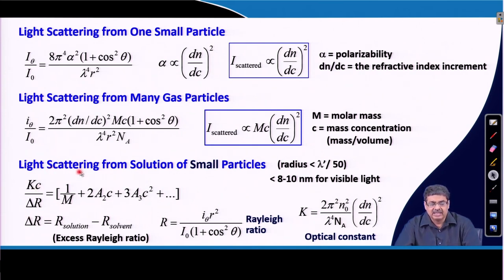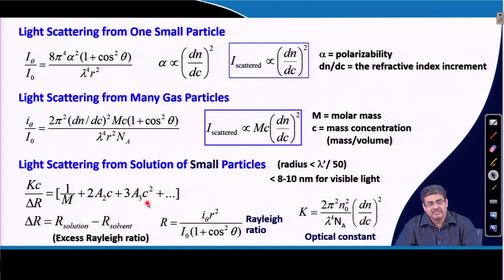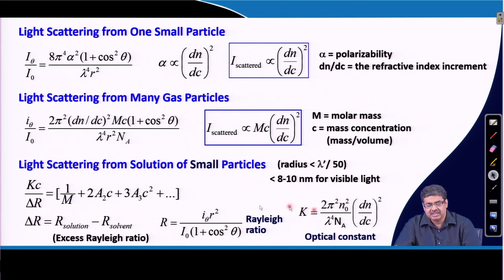We talked about how light scattering for solution also depends on the scattering due to concentration fluctuation of the solvent molecules as well as the solute molecules, in this case polymer molecules. For solute molecules, the light scattering from solvent molecules was nullified by taking the excess Rayleigh ratio, and concentration fluctuation from solute molecules was accounted for by a virial expression related to osmotic pressure. If we replace R and the optical constant, the expression takes this form.